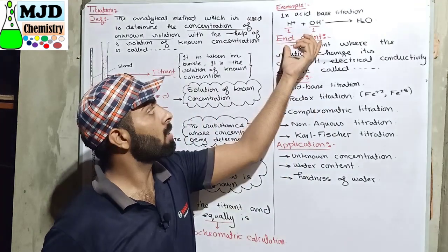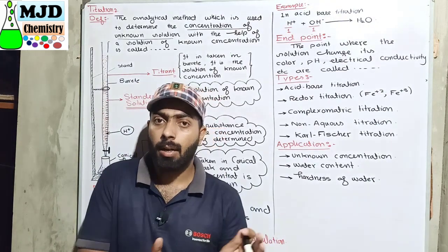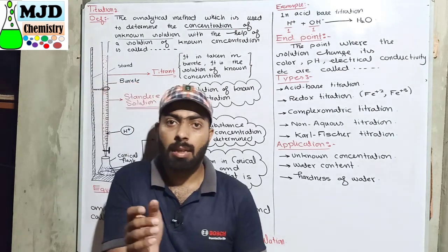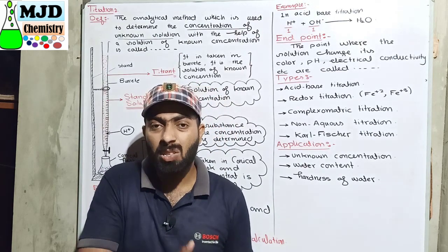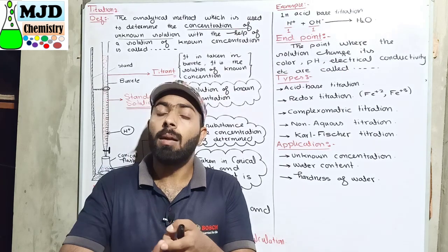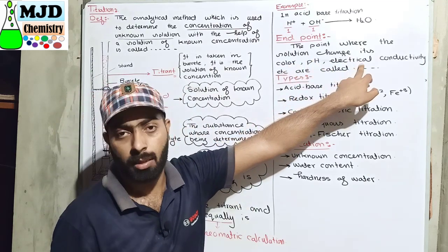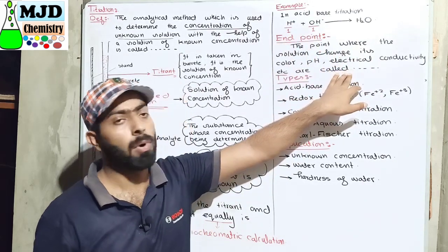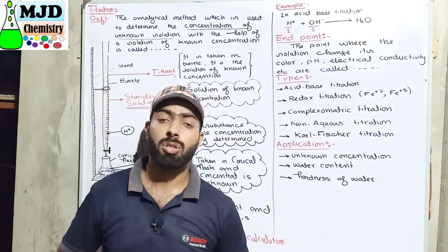The last term is endpoint. There is a significant difference between equivalence point and endpoint. The endpoint is the point where a solution changes its color, electrical conductivity, or pH. That point where the solution changes these three things is known as the endpoint. This is the most important thing in titration, as the endpoint helps us determine the concentration of the unknown solution.